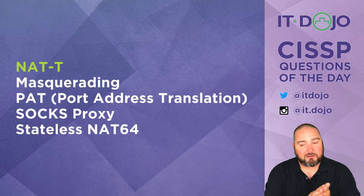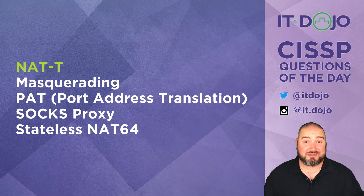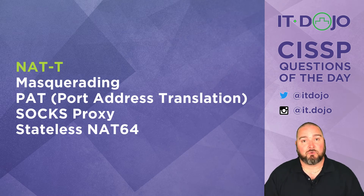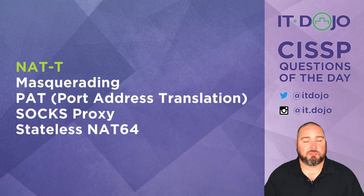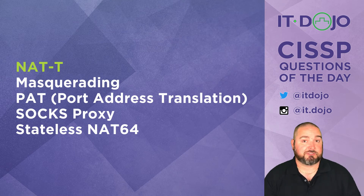A lot of VPN solutions that are based on ESP will oftentimes have to do this because there's so much NAT in the world. Just straight sending out ESP traffic from, say, your notebook oftentimes isn't going to work because you're going to pass through a NAT at some point on your way through the internet. You're going to have to smuggle or tunnel that stuff through in order to get it where it's going.